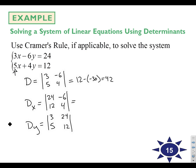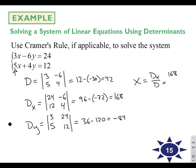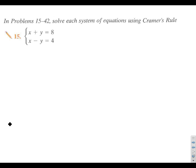DY is 36 minus 120, which is negative 84. So X is DX over D, which is 168 over 42, which is 4. Y is DY over D: negative 84 over 42, so Y is negative 2. You've got your answers. You can try problem 15.